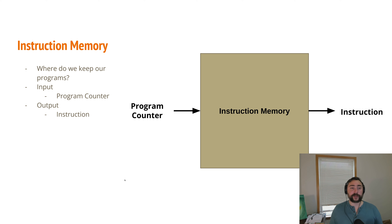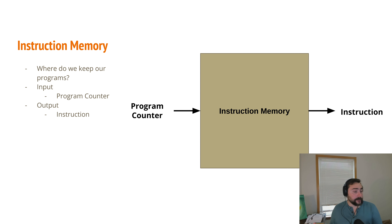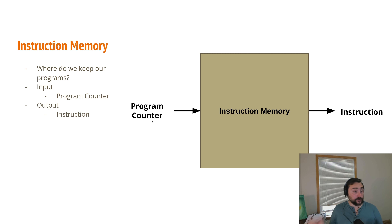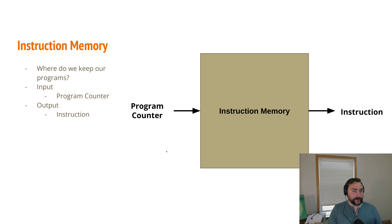Alongside the program counter, we have our instruction memory. We have this concept of a stored program computer, so all of our instructions are stored someplace in memory, and to execute them we have to read them from this instruction memory. The input is a program counter value — basically an address — and we're reading something from memory at that specific address. Our output is the instruction itself, that 32-bit RISC-V instruction stored at the location indicated by the program counter value.